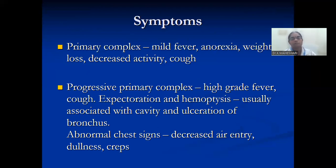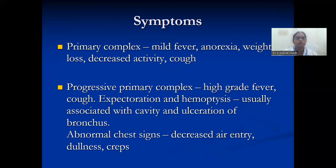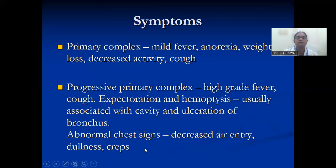Symptoms of primary complex: there can be mild fever, anorexia, weight loss, decreased activity, and cough. With progression of primary complex, there can be high-grade fever, cough, expectoration, and hemoptysis — hemoptysis usually occurring when associated with cavitation and erosion of the bronchus. Abnormal chest signs include decreased air entry, dullness, and crepitations.